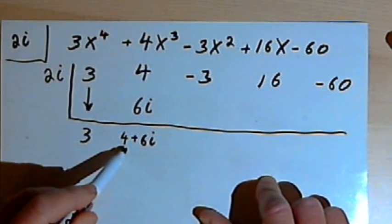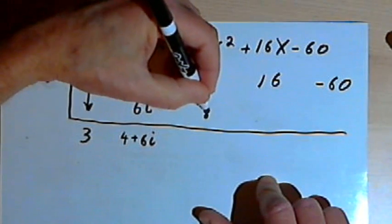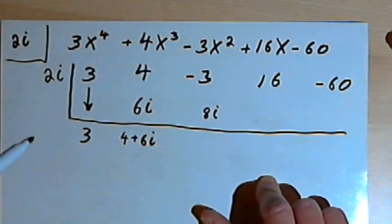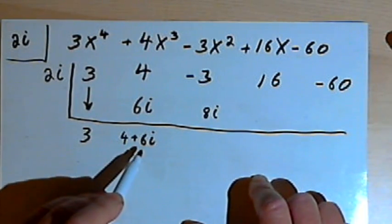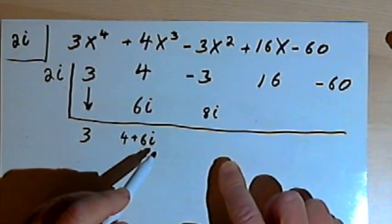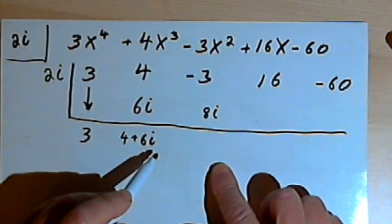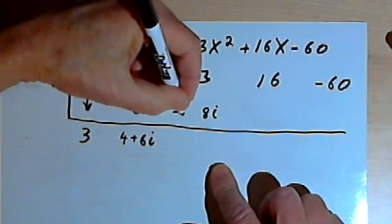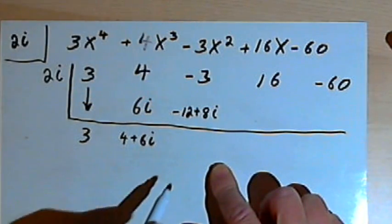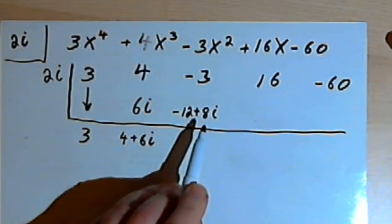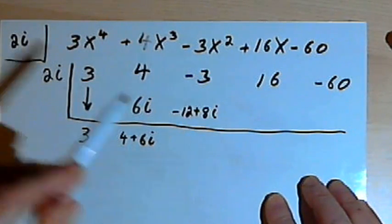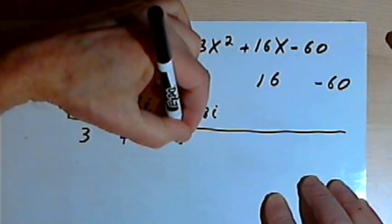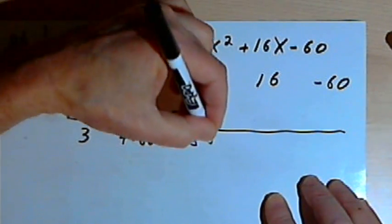Well, 2i times 4 is 8i. I'll write that underneath the negative 3 in the next column. And I've also got 2i times 6i. Well, 2 times 6 is 12. i times i is i-squared. Remember that i-squared is negative 1. So if we've got 12i-squared, that's actually negative 12. So the total product that I get is negative 12 plus 8i. Now I want to add that along with the other number in that column, the negative 3. Add those together, I get a negative 15 plus 8i.